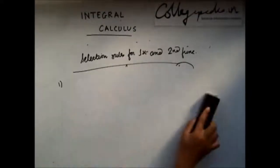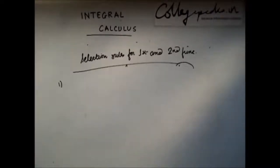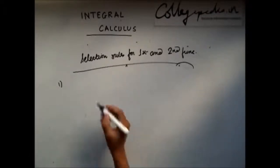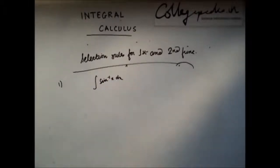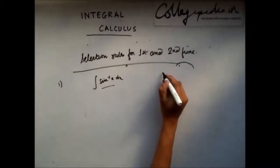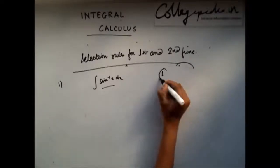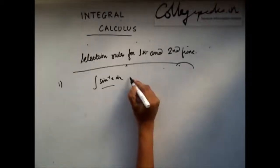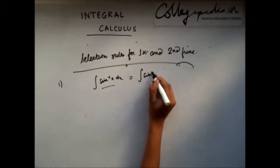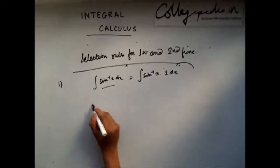The next rule is that if you have been asked to integrate a function which does not have any other function — for example, sine inverse x — in this case there is only one function. So what do you do in cases like this? You take the constant 1 as your second function. So you write sine inverse x as sine inverse x into 1 dx.